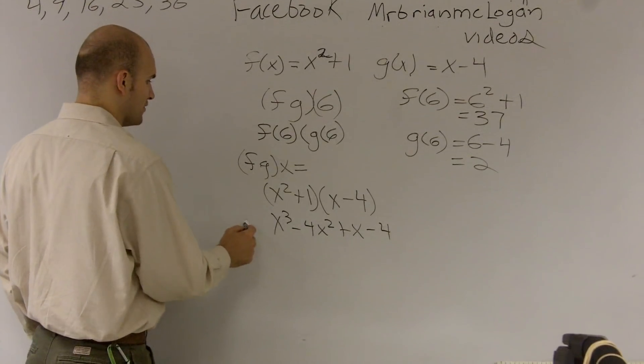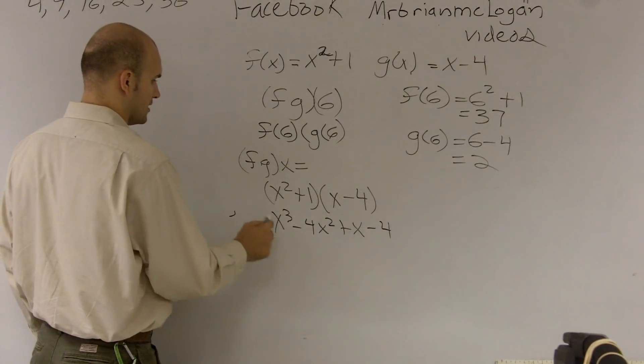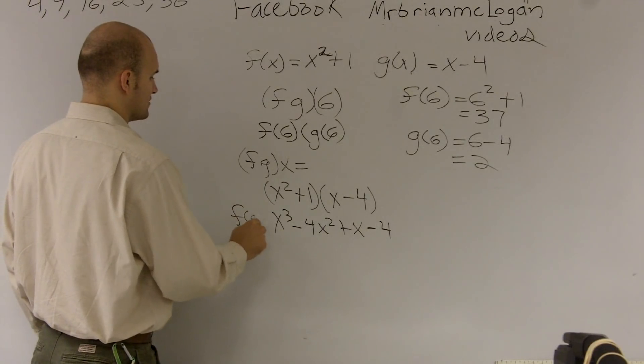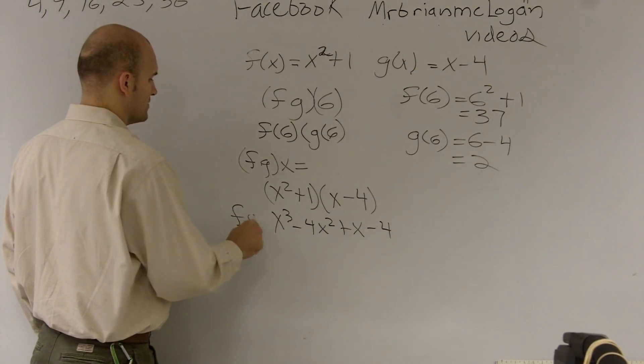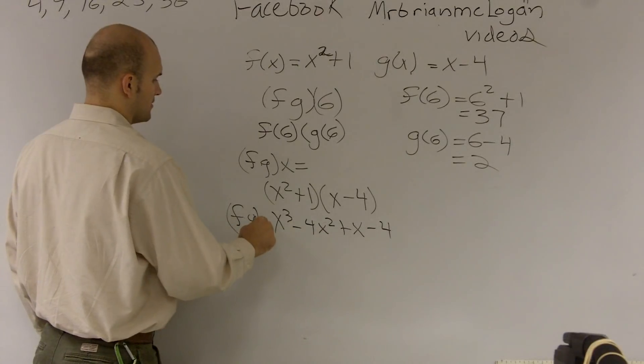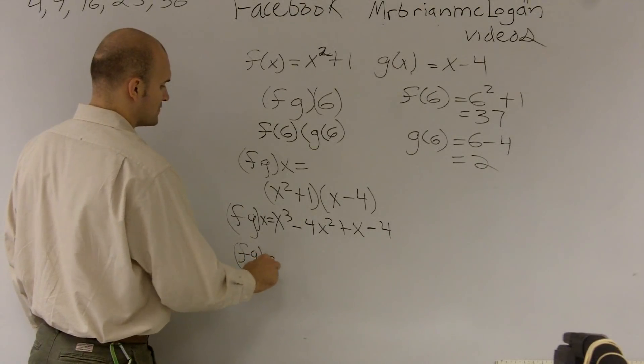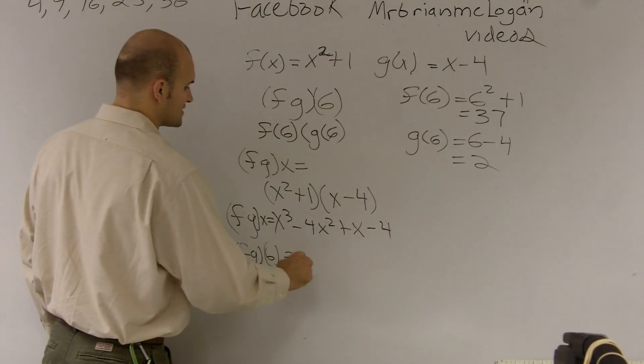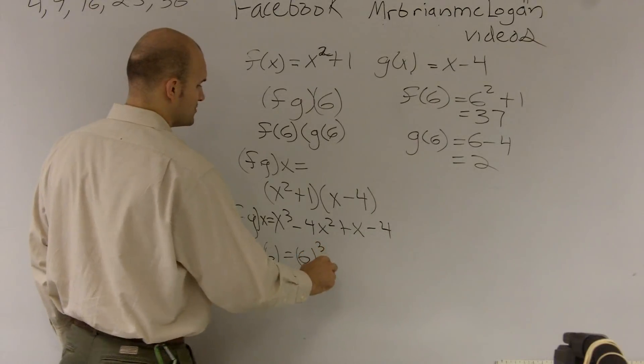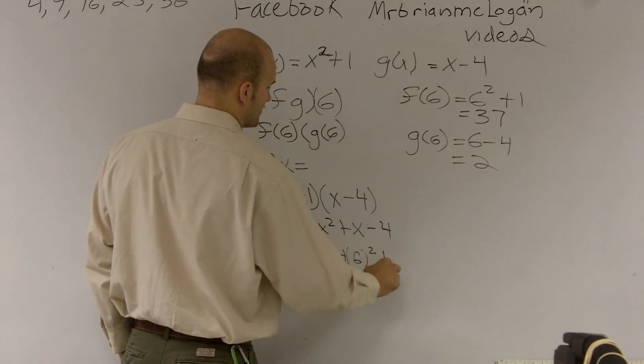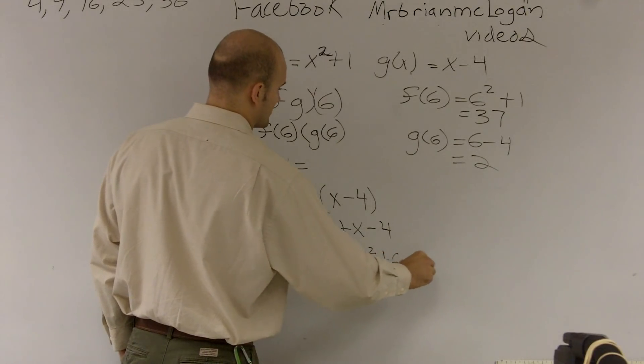Then you could figure out what is, that is f of x, or sorry, that's f of g of x. And then if you want to find f of g of 6, you just plug in the value 6. So 6 cubed minus 4 times 6 squared plus 6 minus 4.